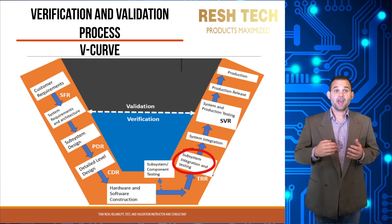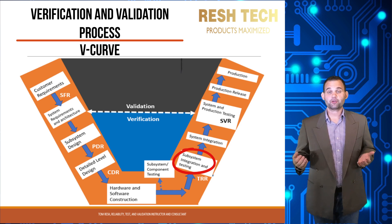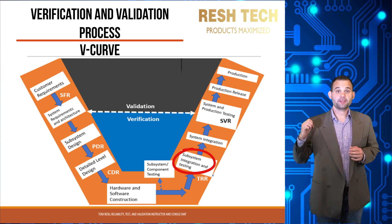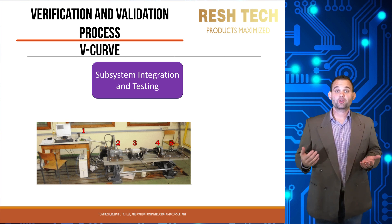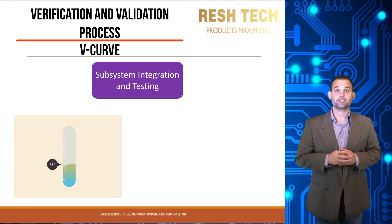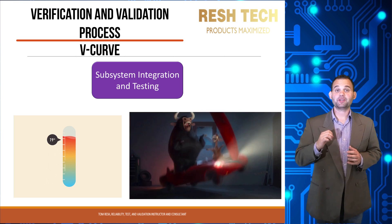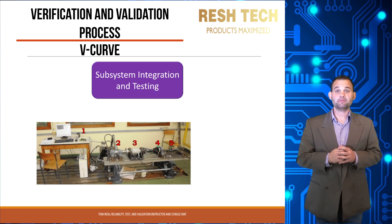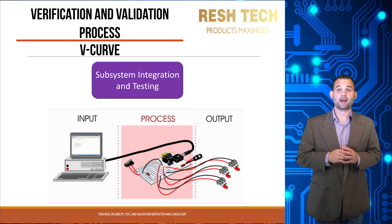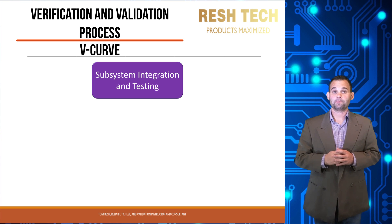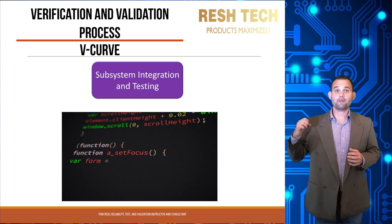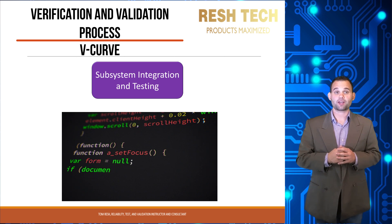The first right-hand step is subsystem integration and testing, where components are integrated together to form a subsystem. This typically starts as bench testing and progresses into temperature or vibration testing depending on the application. Verification engineers verify that the subsystem meets design requirements — for example, for an electronic subsystem, outputs or signals are checked against expected values in the system requirements document. Similarly, software engineers verify that software components operate as intended per system requirements when integrated into software modules.